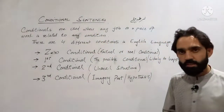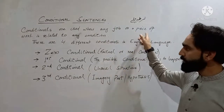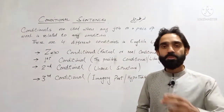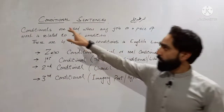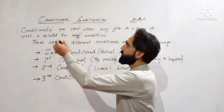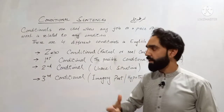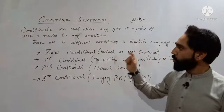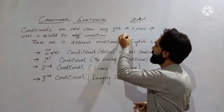Conditional sentences ki definition: conditionals are used when any job or a piece of work is related to any condition. Conditional sentences tab istamal kiye jate hain jab koi kaam kisi condition se jura ho. Condition ka matlab hai 'shart'. Conditional sentences ka matlab hai shartiya jumla — yani koi na koi shart lazmi maujud hogi is tarah ke jumlon mein.